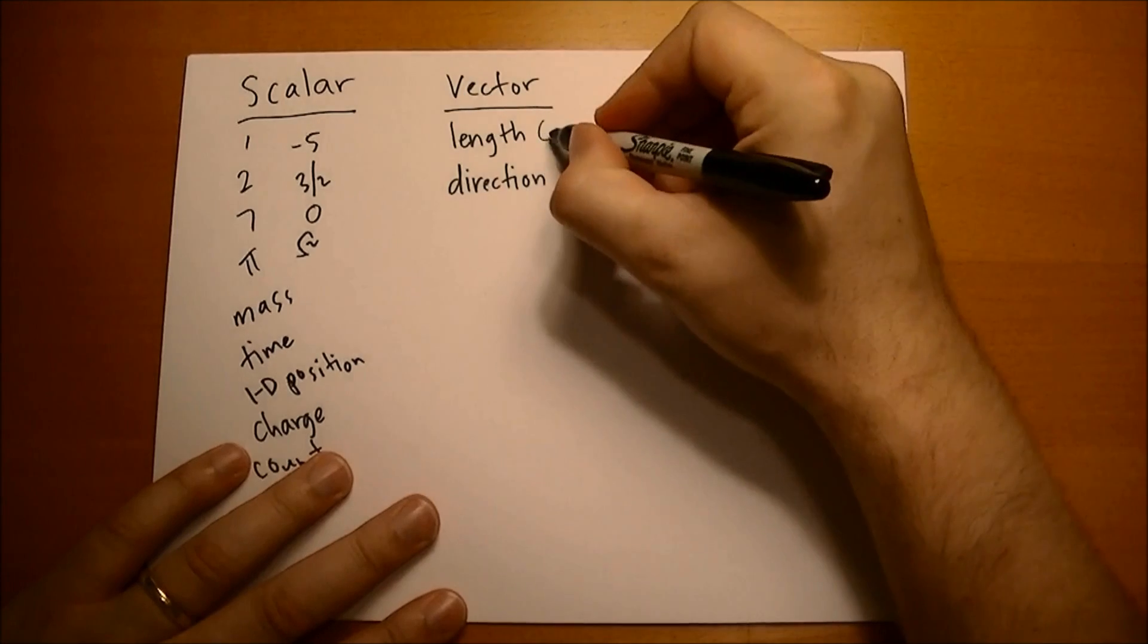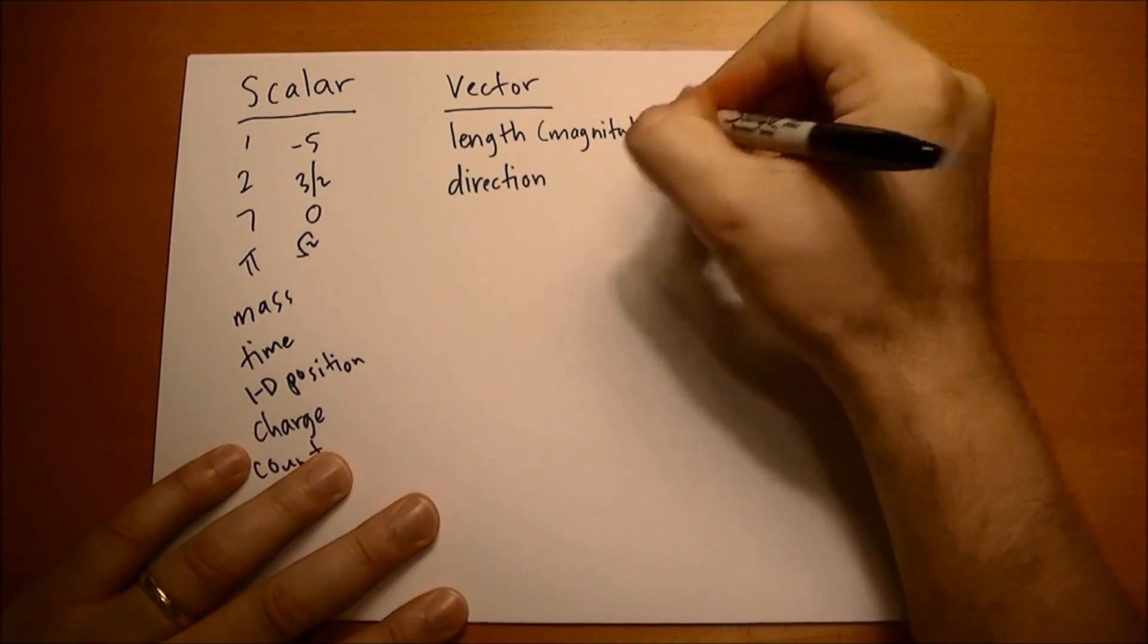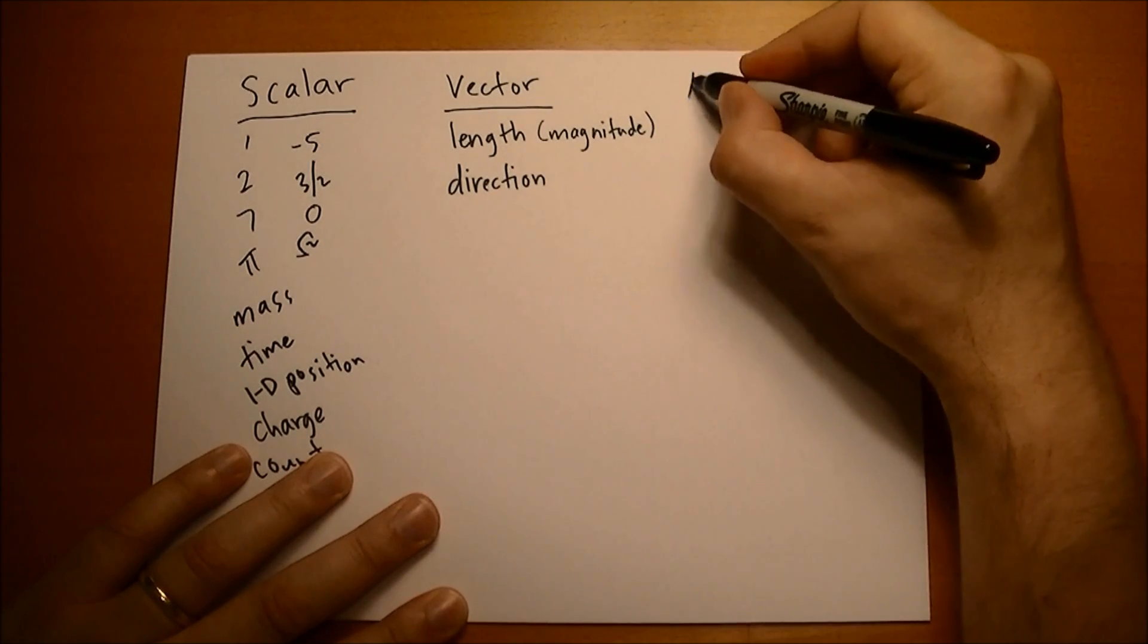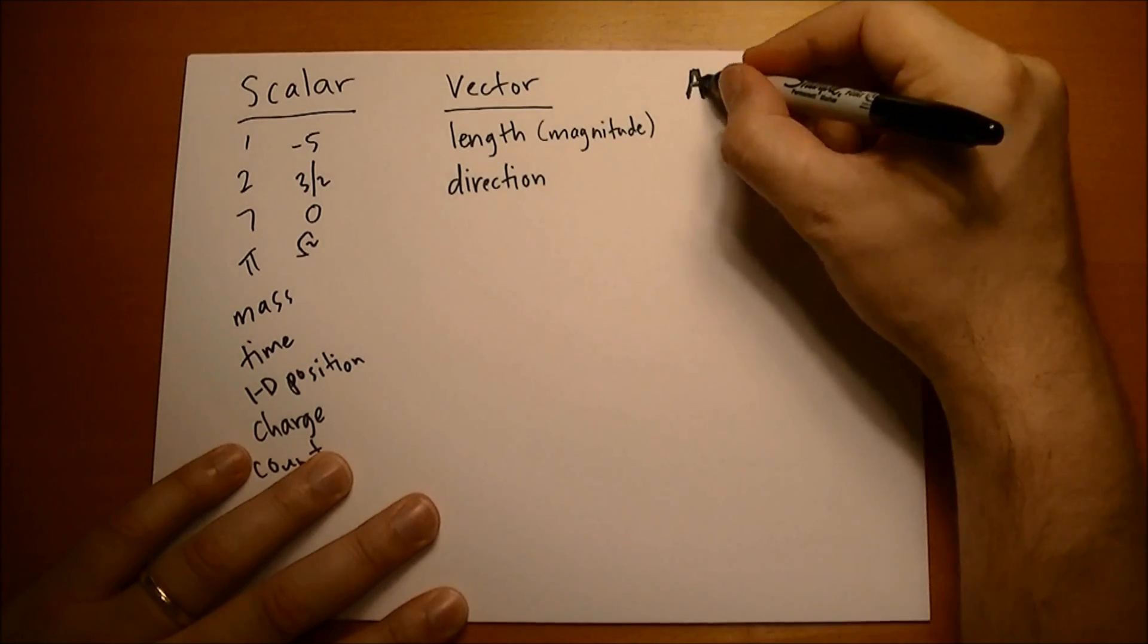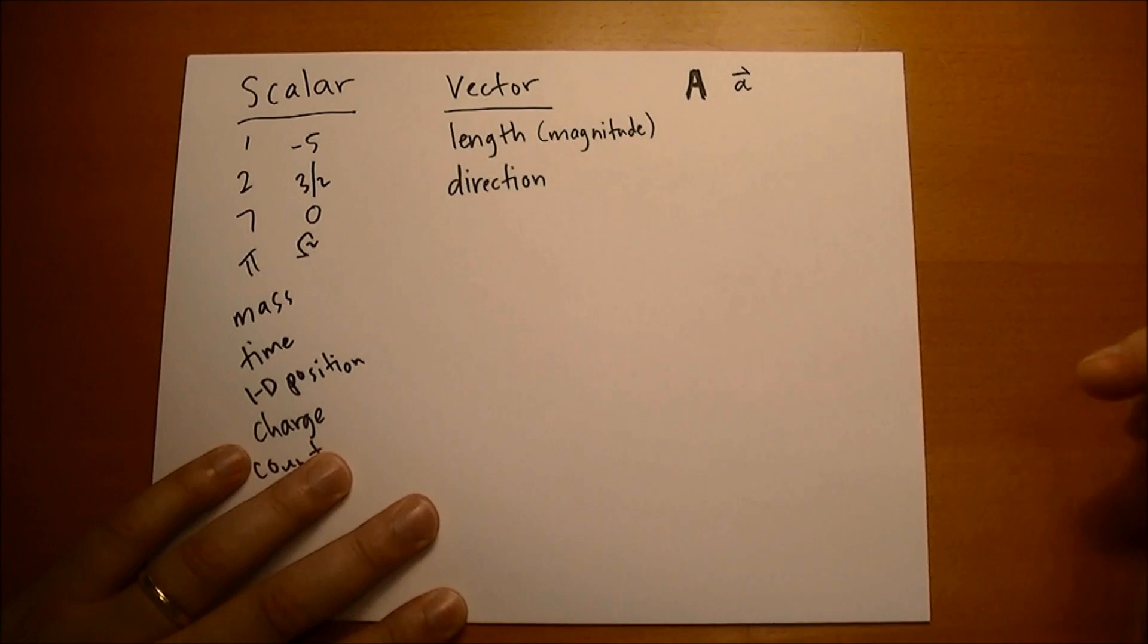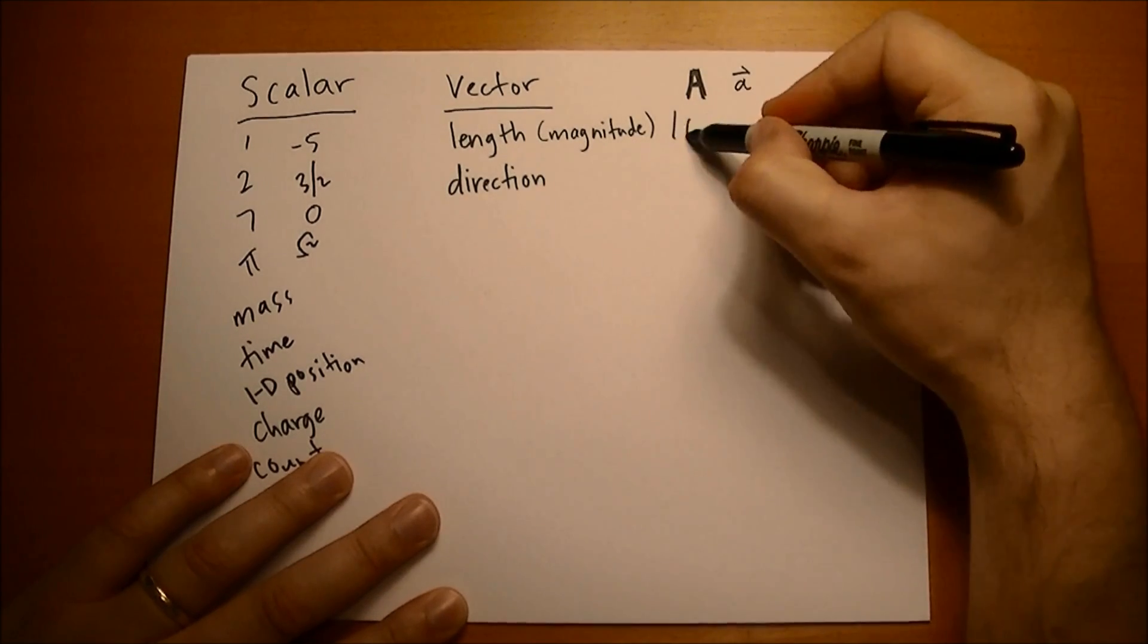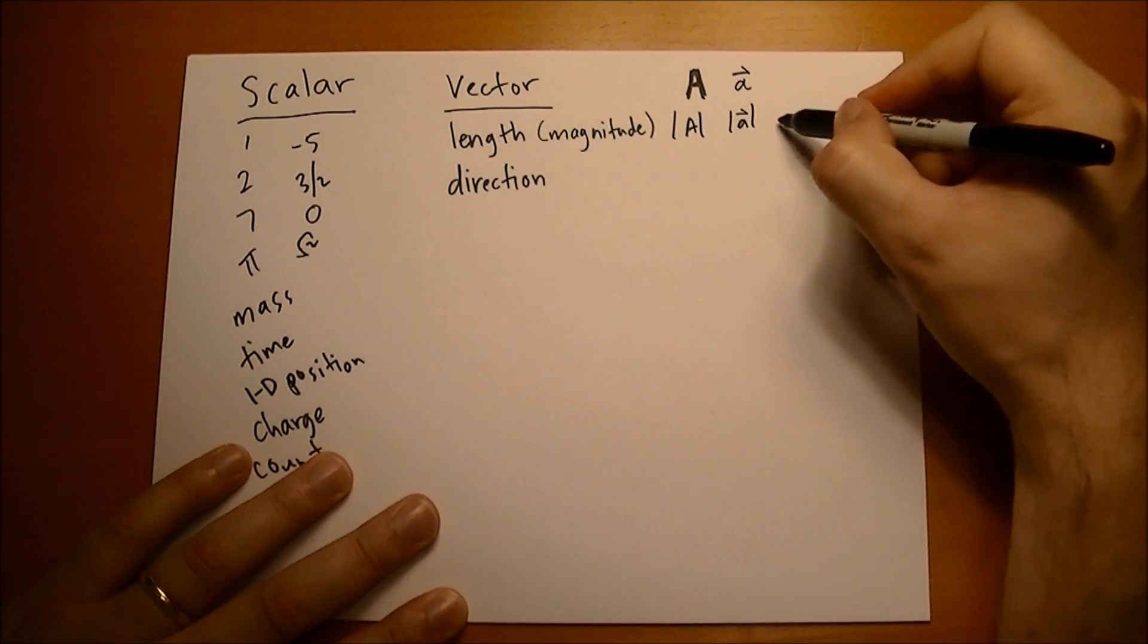Sometimes we call the length the magnitude as well. Vectors in the book are represented with bold letters, usually capital letters. It's really hard to write bold letters with your handwriting, so we just use any letter with an arrow on the top. When we describe the length, we can write bars around the vector, or we can just write the letter not bold.